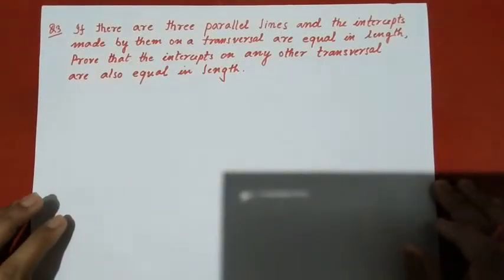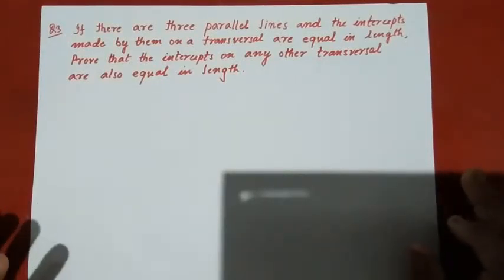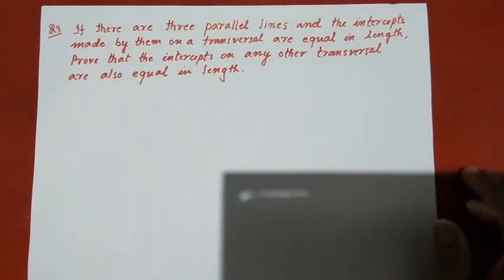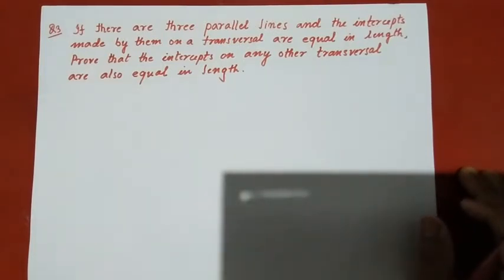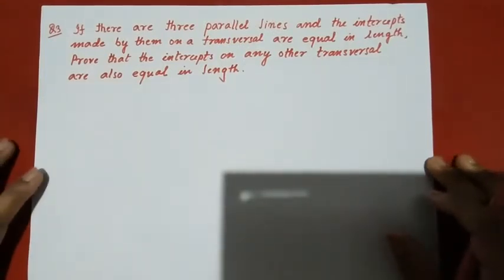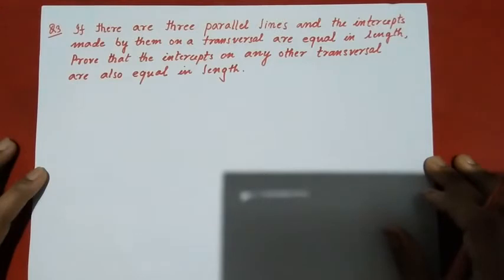Class 9, Exercise 1, question number 3. We will discuss the converse of the midpoint theorem. Question number 3 states: if there are three parallel lines and they intercept equal segments on one transversal, then the intercepts made by them on any other transversal are also equal in length.